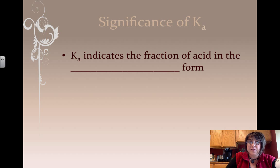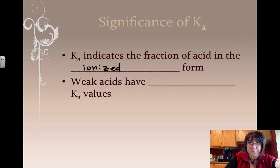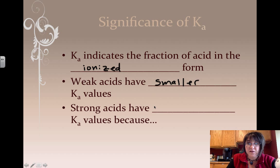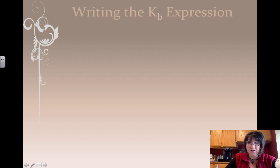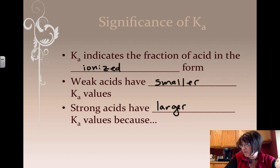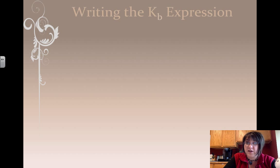The Ka indicates the fraction of the acid that exists in its ionized form. Weak acids have smaller Ka values. And the stronger the acid, the larger the Ka value will be, because the more ions we get, especially hydrogen ions.